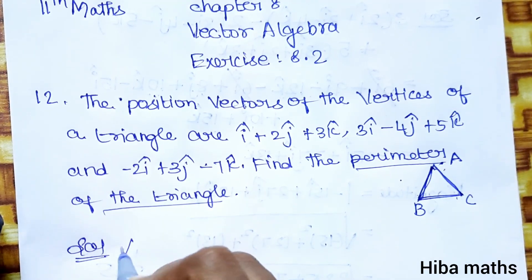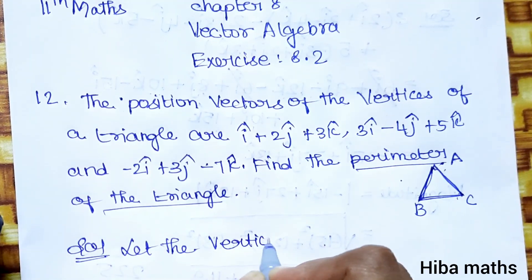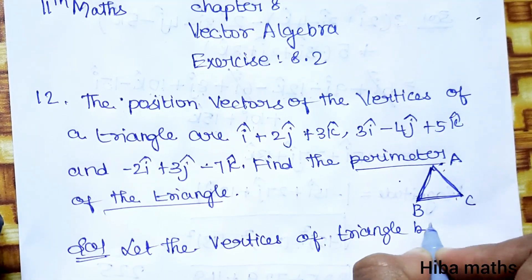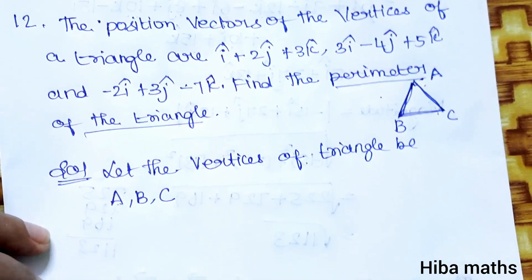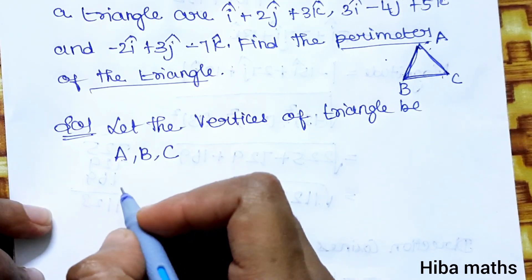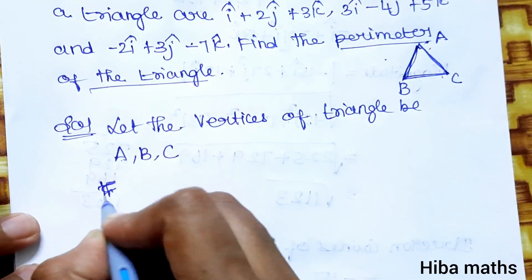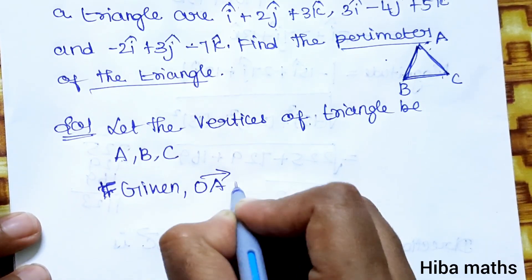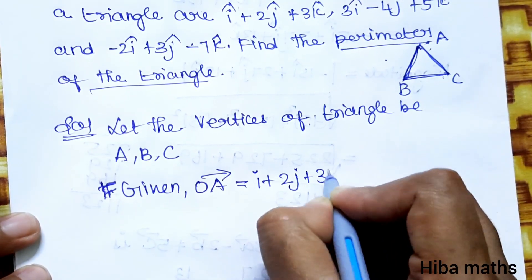In the solution, let the vertices of the triangle be A, B, C. The position vectors of the triangle are OA, OB, OC. Given: OA vector equals i plus 2j plus 3k.